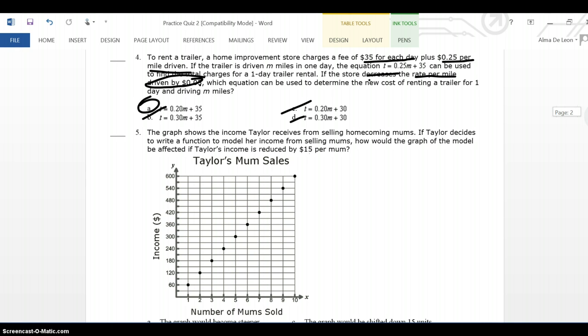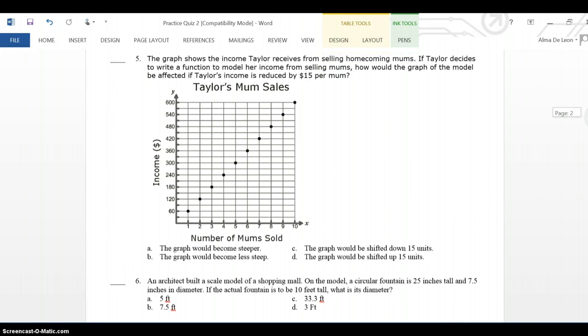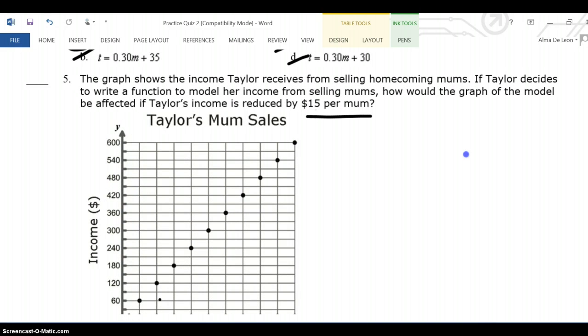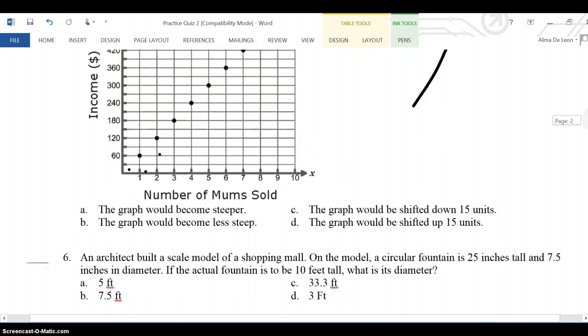Number five. The graph shows the income Taylor receives from selling homecoming mums. If Taylor decides to write a function to model her income from selling mums, how would the graph of the model be affected if Taylor's income is reduced by $15 per month? Okay, so at the moment, Taylor is charging, it looks like $60 per month. For one mums, you pay $60. For two, you pay $120. But we're going to reduce that by $15. So, for one mums, he's going to pay $15.